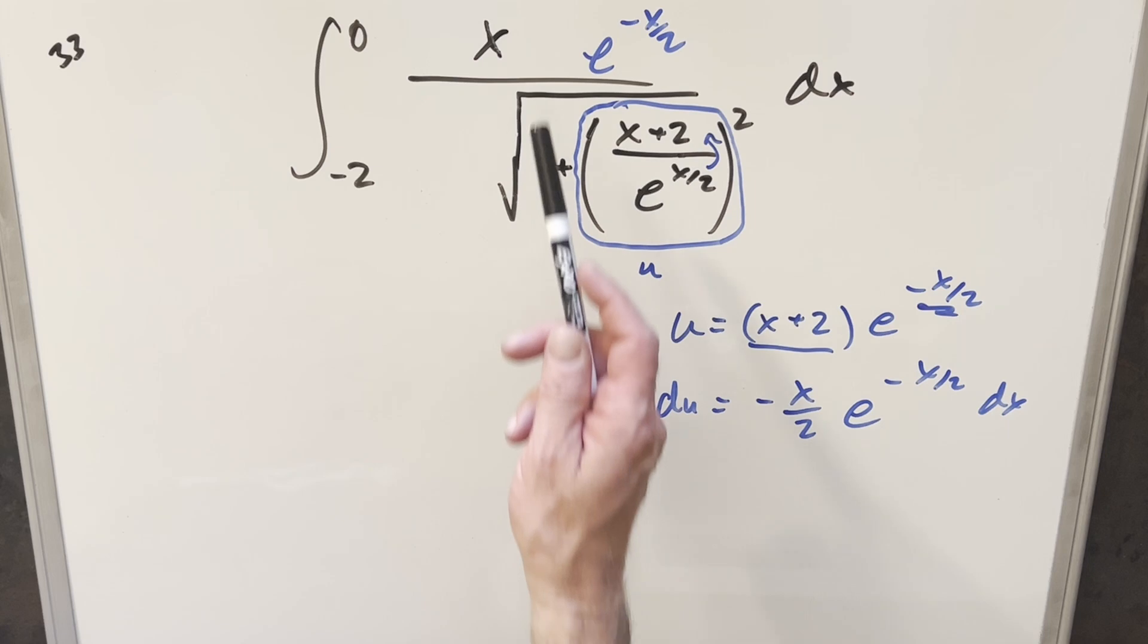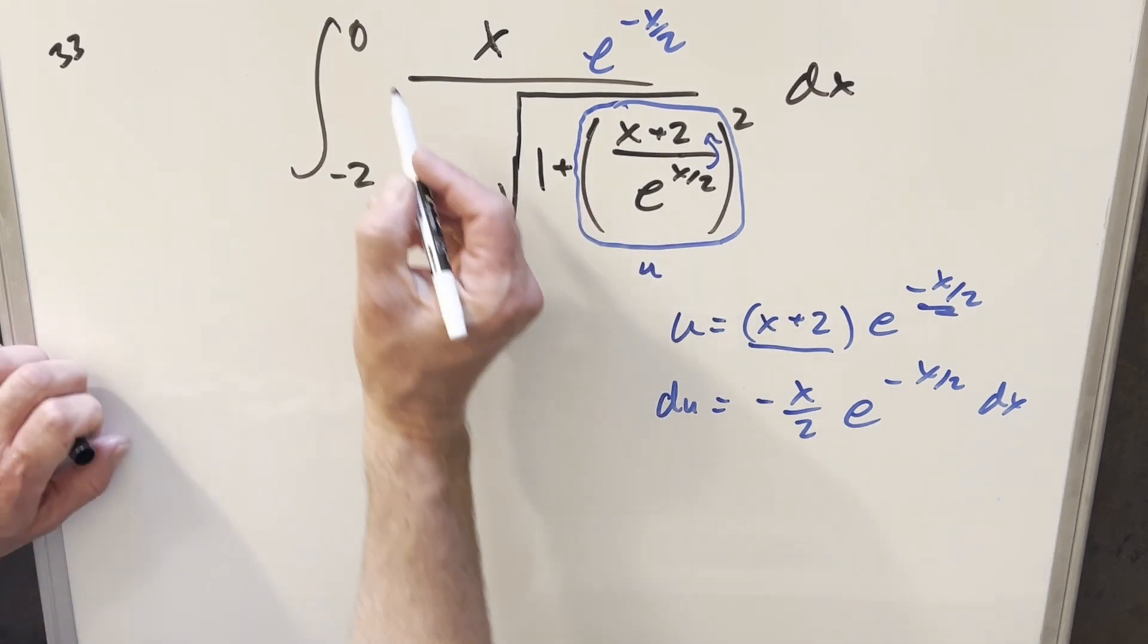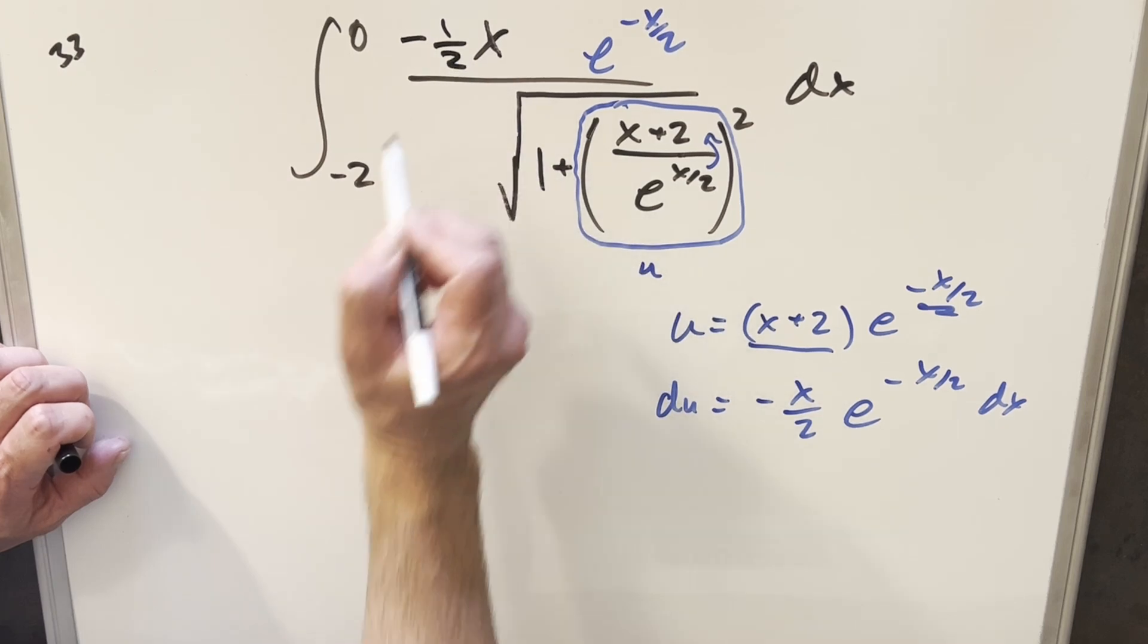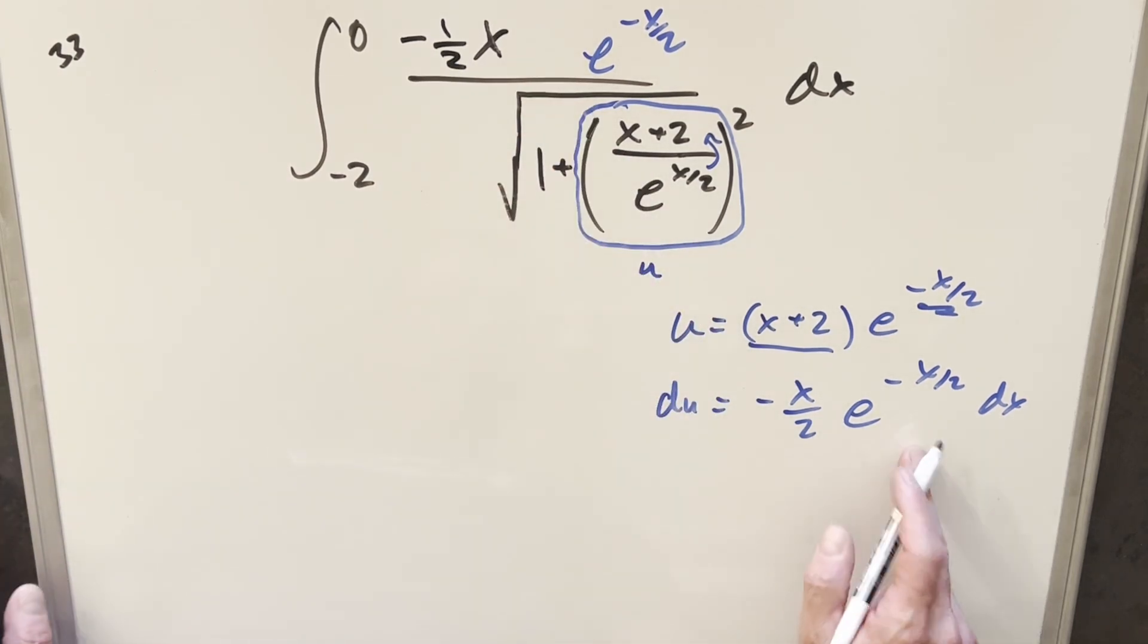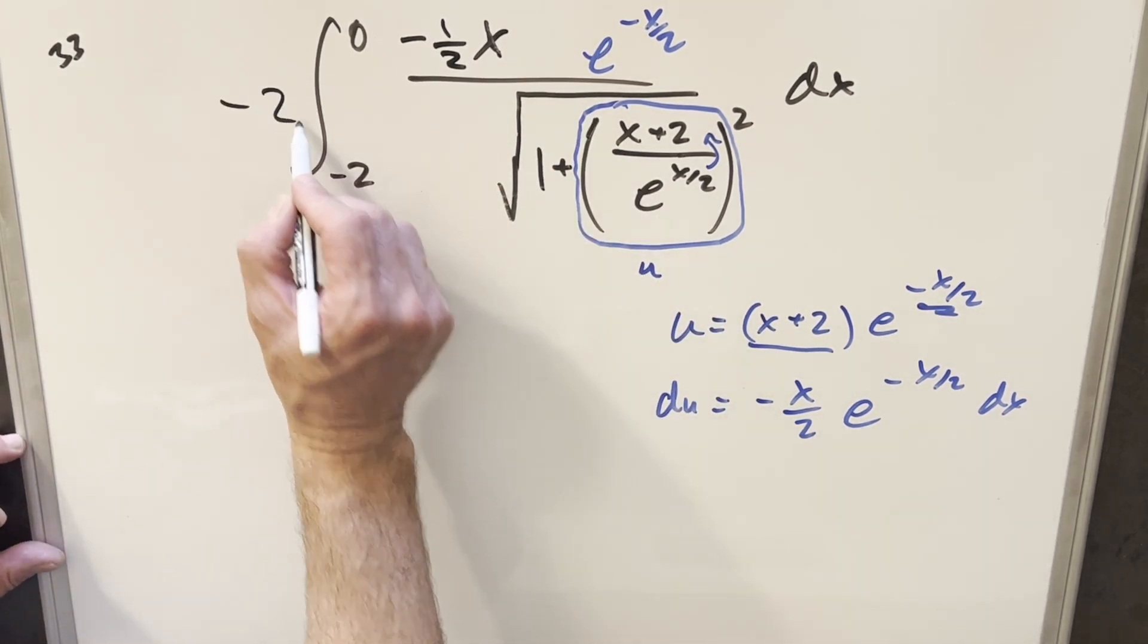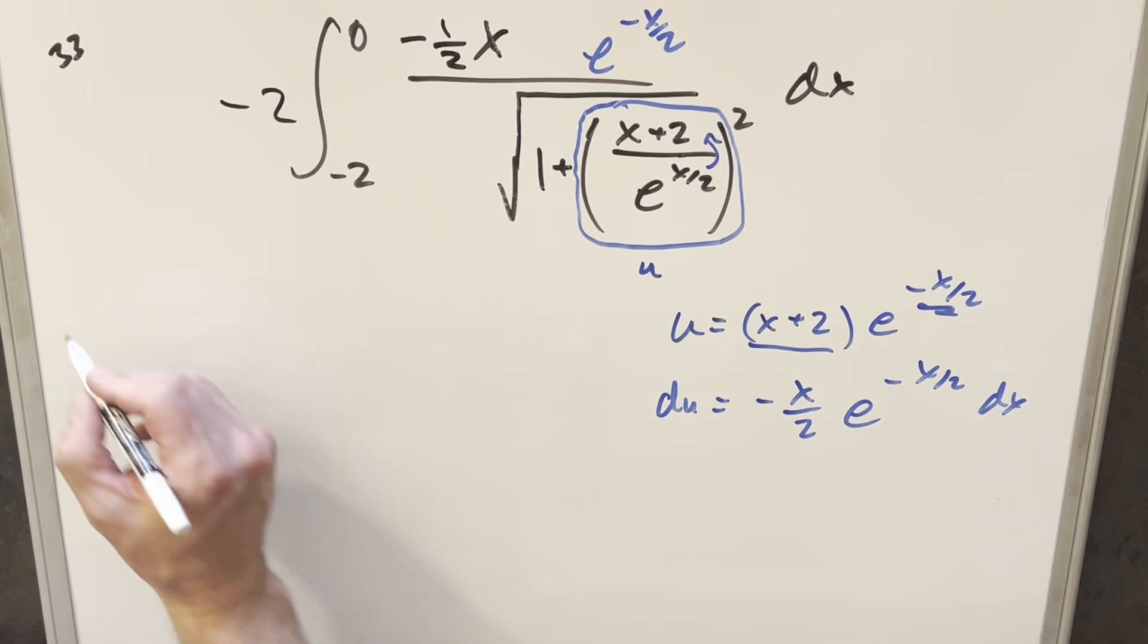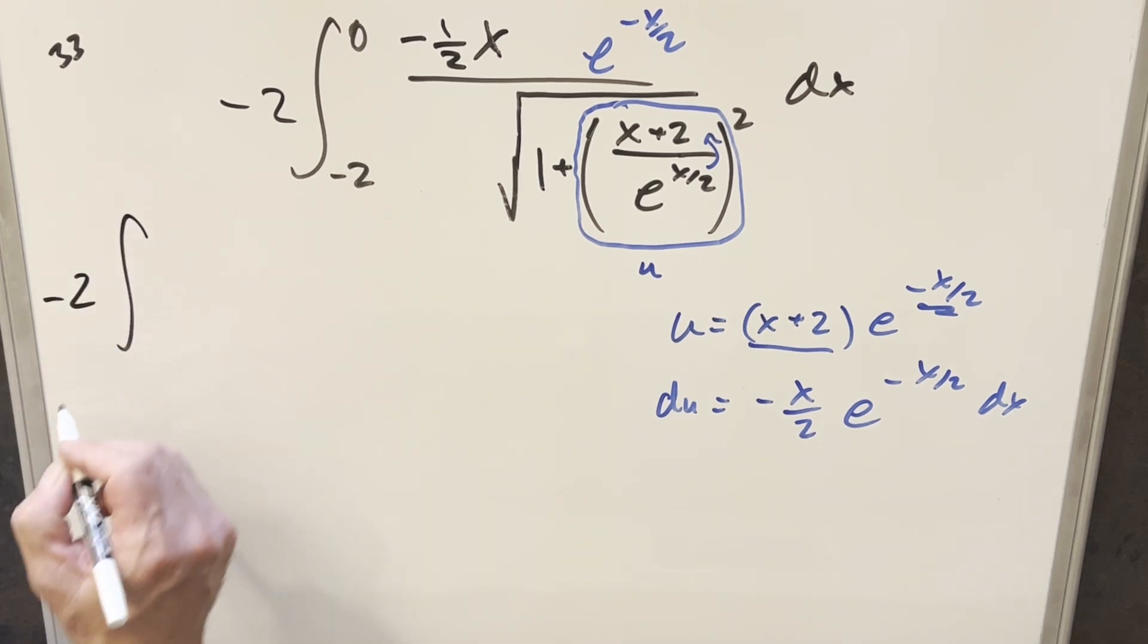And now before I substitute, notice our numerator is really close to what we have over here. I can just kind of make this happen by multiplying in. If I multiply in minus 1 half, now this is exactly what we have here. I don't want to change it, so I'll multiply by minus 2 out front. Then we'll just go ahead and substitute.